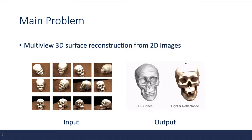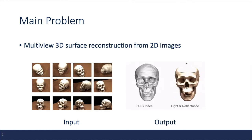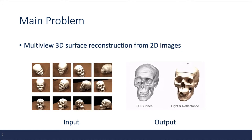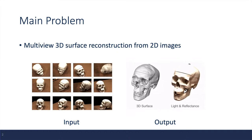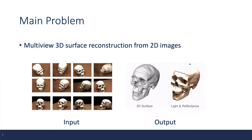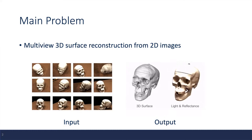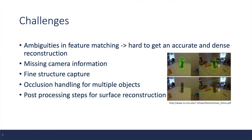The main problem this paper is trying to solve is multiview 3D surface reconstruction from 2D images. As an example, taking many images of this skull from different perspectives as input, we want to produce an accurate 3D surface reconstruction, both in terms of the geometry and appearance.